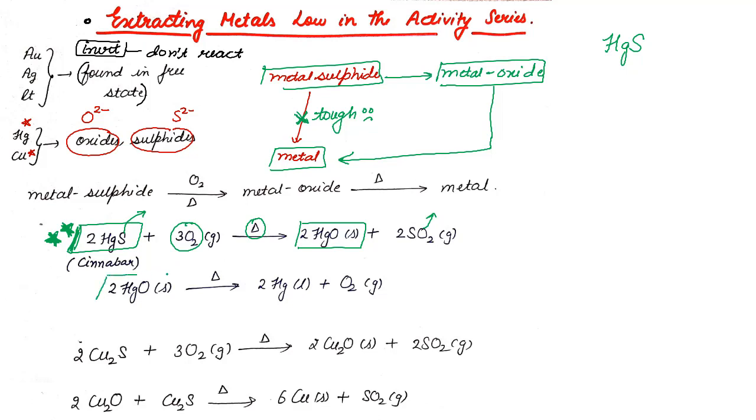Now, since it is a metal which is less reactive, so if you simply heat the metal oxide, this HgO, it simply gets converted to mercury and oxygen will be released.